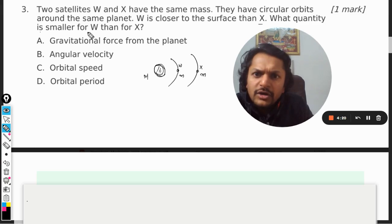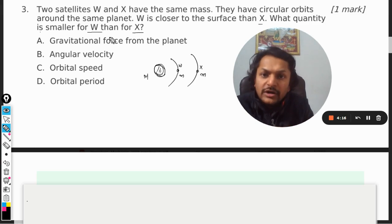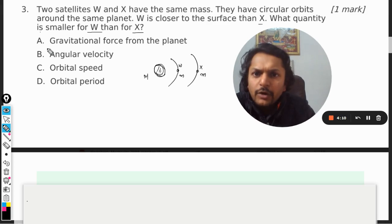What quantity is smaller? Now the first option is gravitational force from the planet. What is smaller for W? No, gravitational force will be bigger, isn't it?